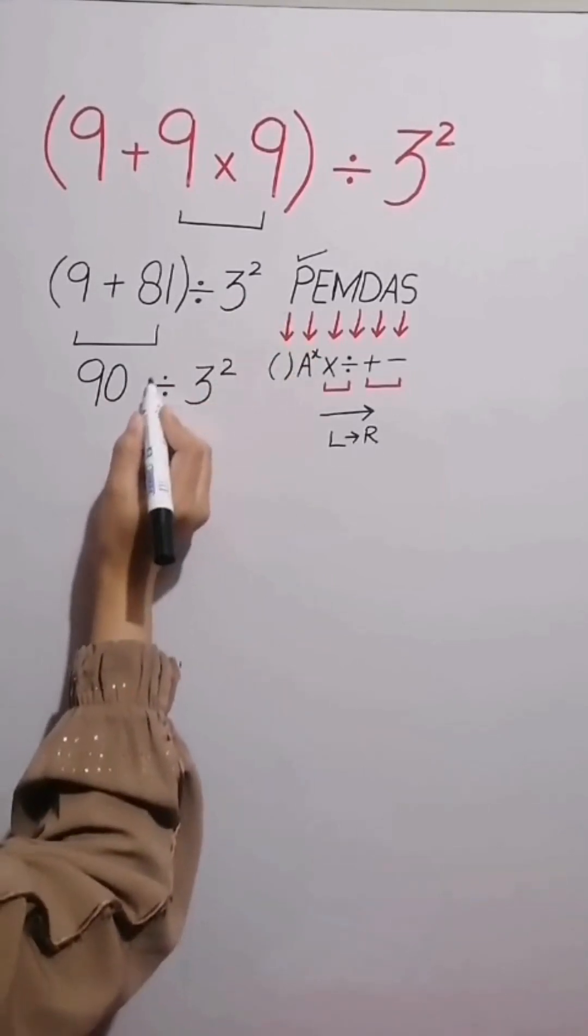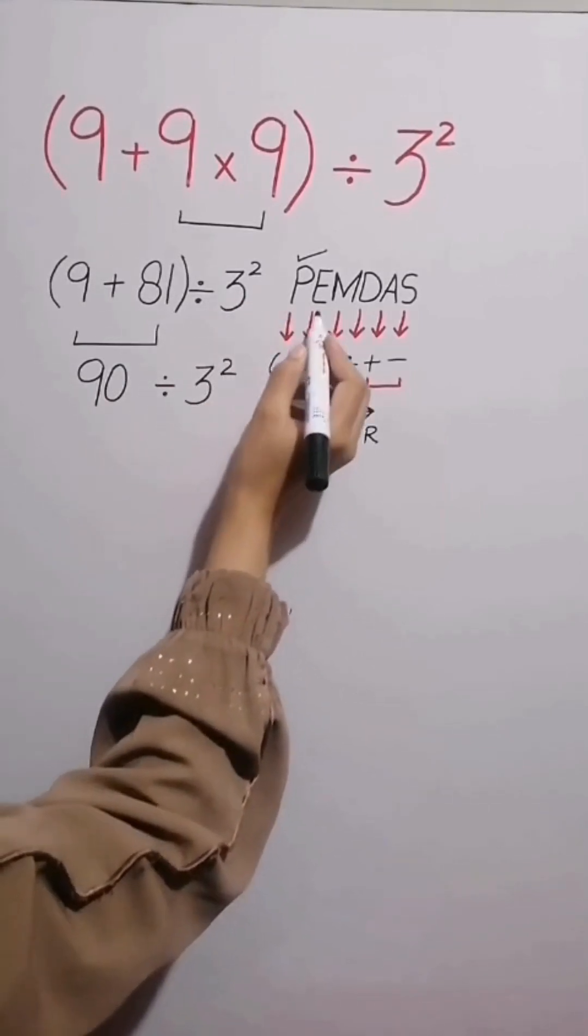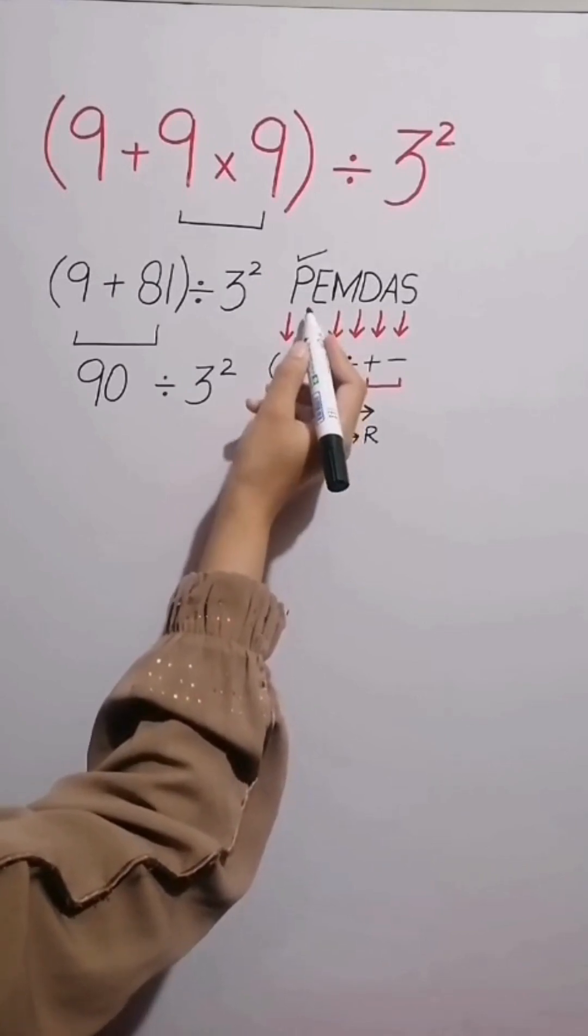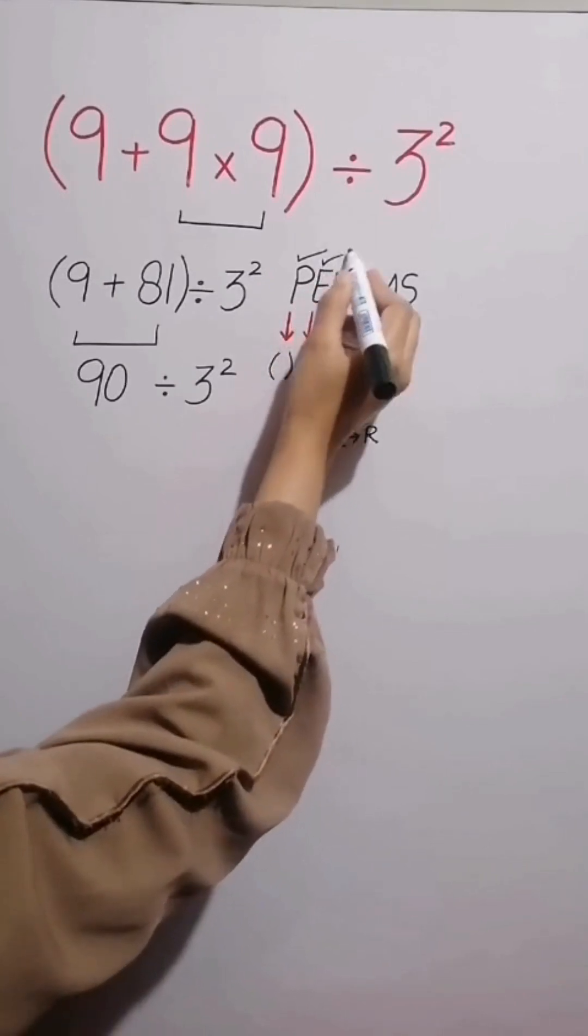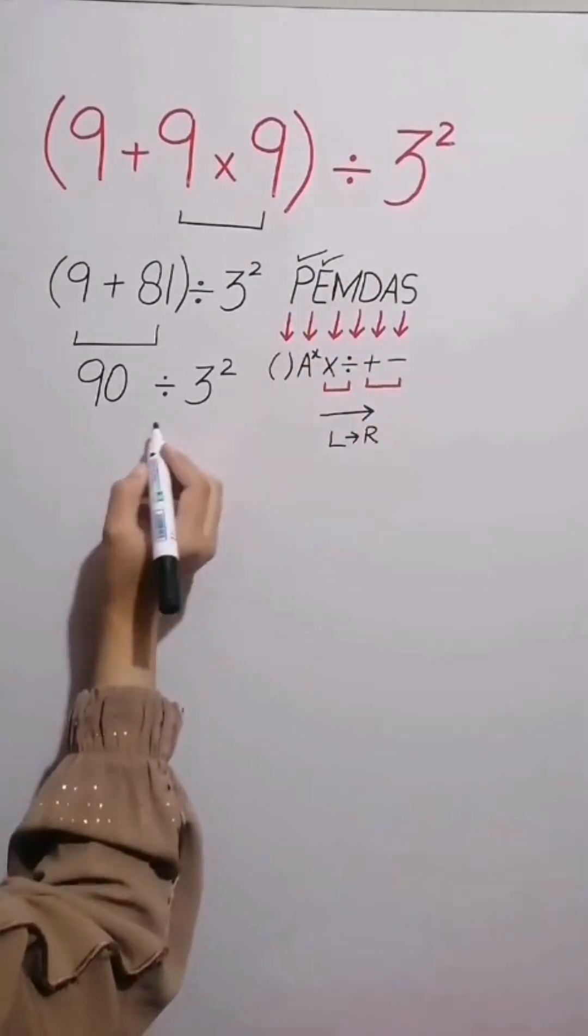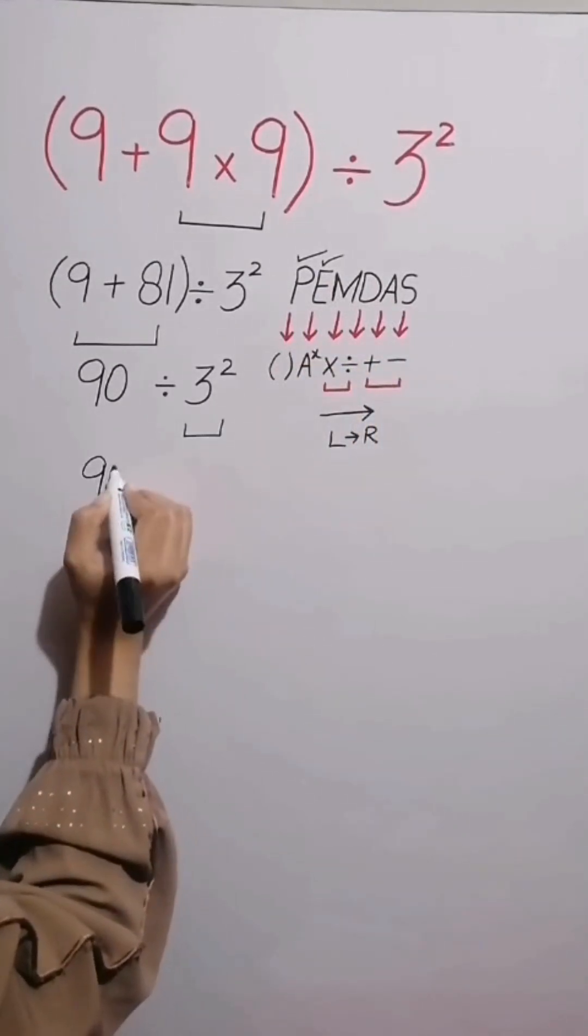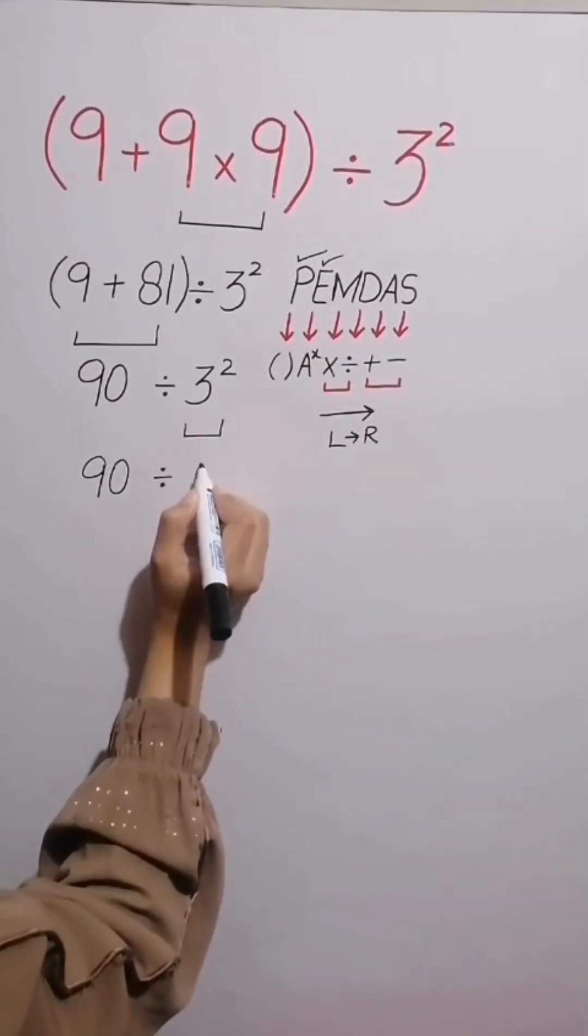In this expression, we have division and an exponent. So first we solve exponent because according to PEMDAS, exponent comes before division. We simplify this expression as 90 divided by 3 squared equals 90 divided by 9.